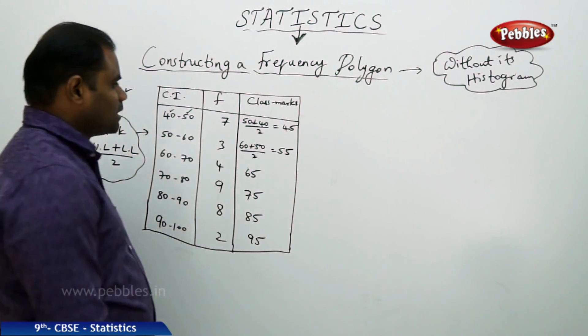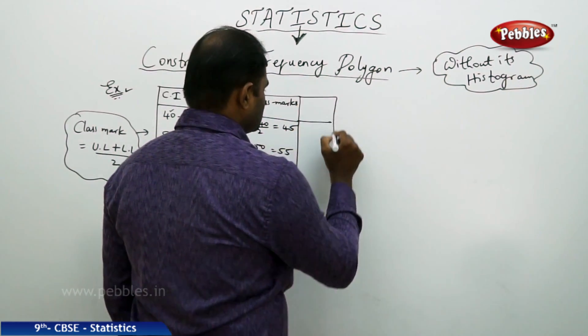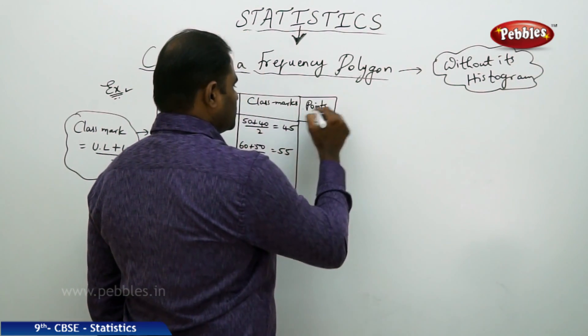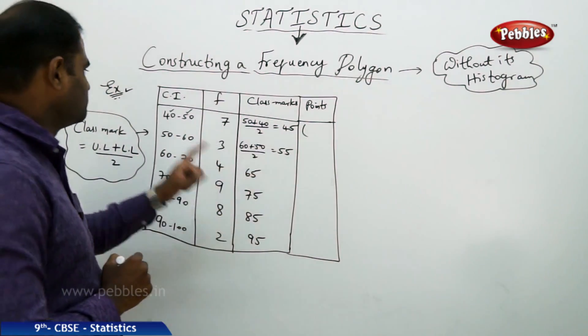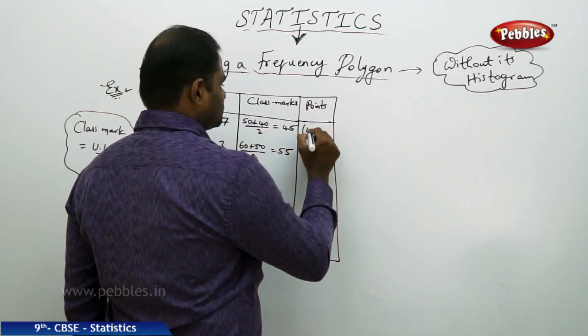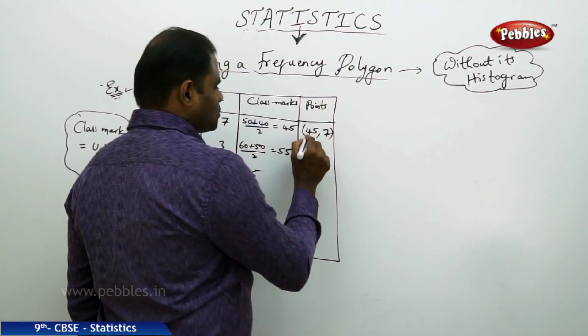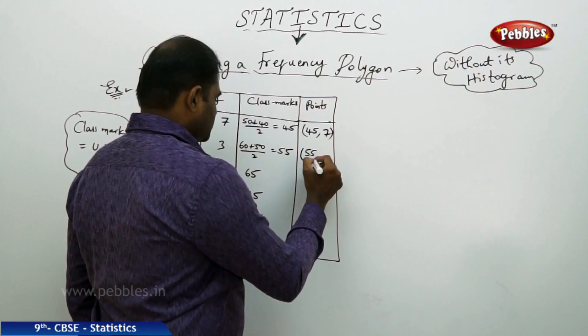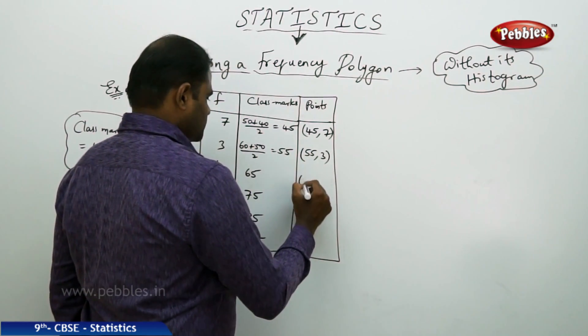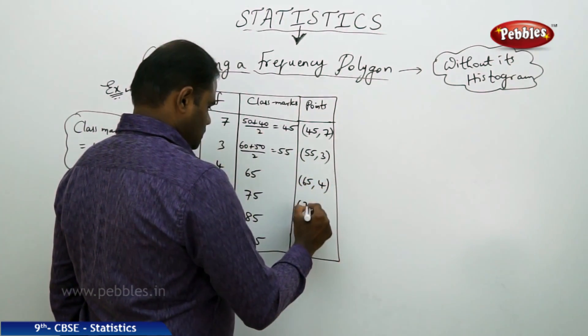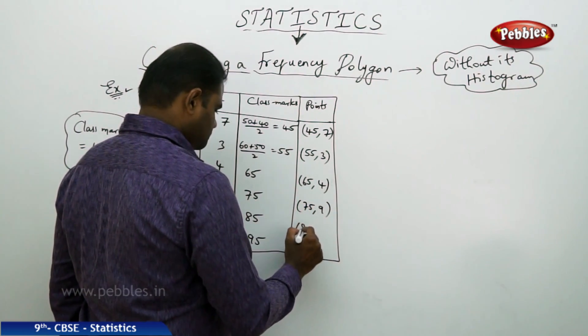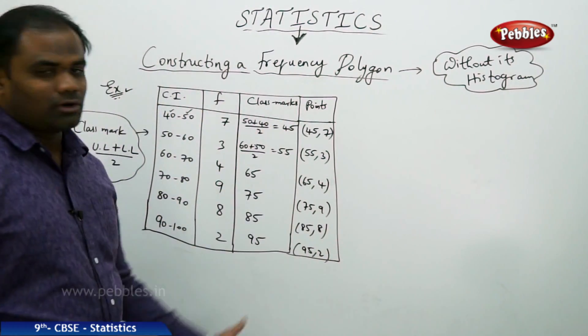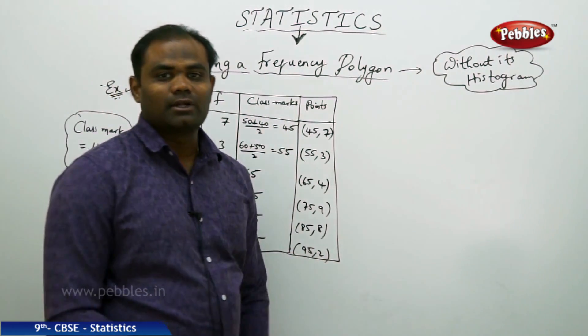Once we get the class marks, then I pick the points and plot. So here I have the point with 45 and 7. My x coordinate is 45 and my y coordinate is 7. In the second case, my x coordinate is 55 and y coordinate is 3, 65 and 4, 75 and 9. So once I get the coordinates, it's all about plotting on the graph paper.